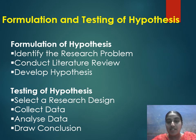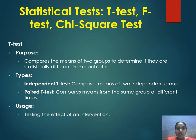Under testing of hypothesis, the steps are: select a research design, collect data, analyze data, and draw a conclusion. The t-test is used to compare the mean of two groups to determine if they are statistically different from each other. Types include the independent t-test, which compares means of two independent groups, and the paired t-test, which compares the same group at different times. Its usage is for testing the effect of an intervention.